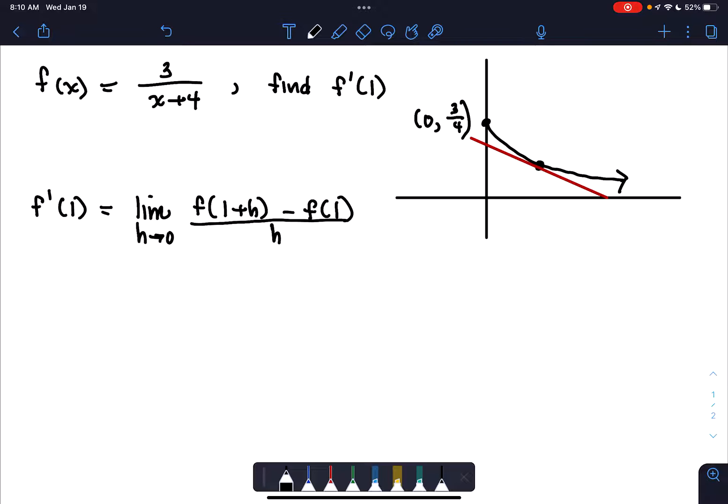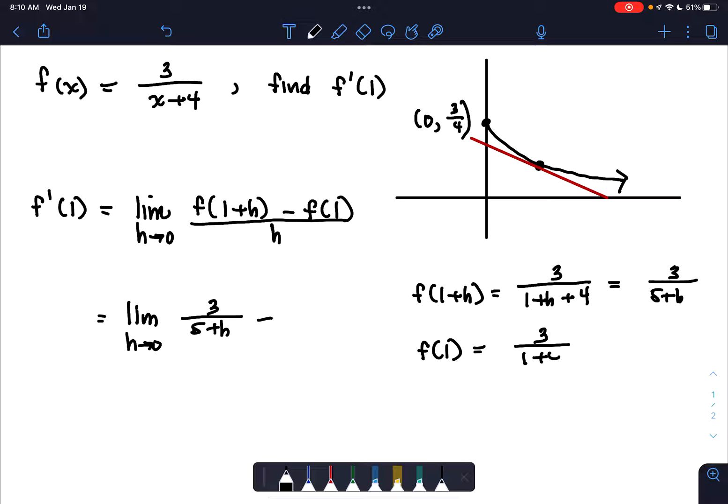So off to the side here, let's find the different pieces. f(1+h) would be 3 over 1 plus h plus 4, and no grouping symbols necessary there. But that looks like 3 over 5 plus h. So I am going to replace that. So we have 3 over 5 plus h. And then f(1) is 3 over 1 plus 4, which is 3 fifths. That's all over h.